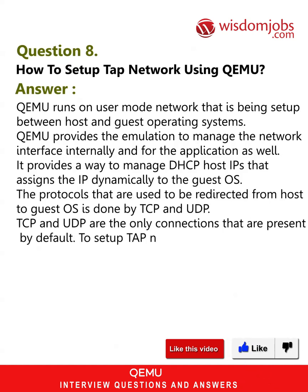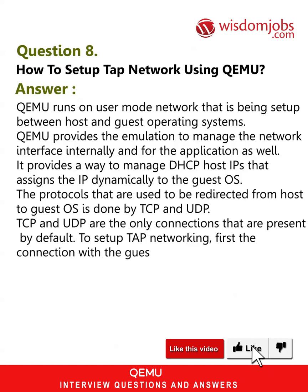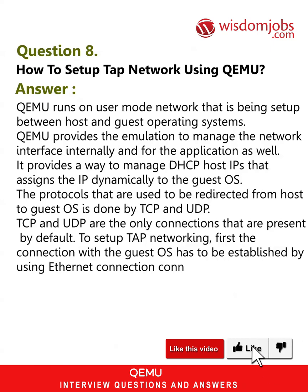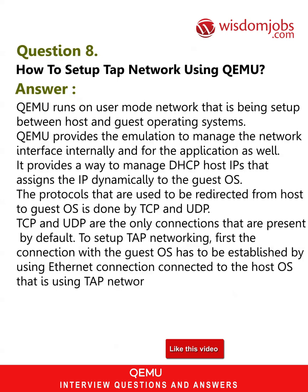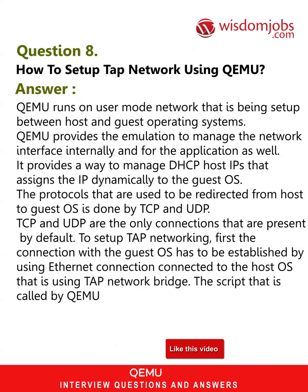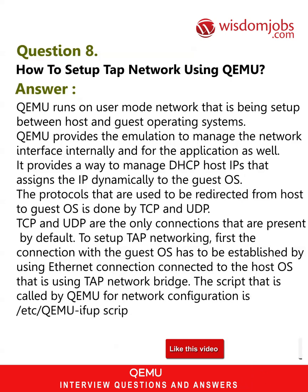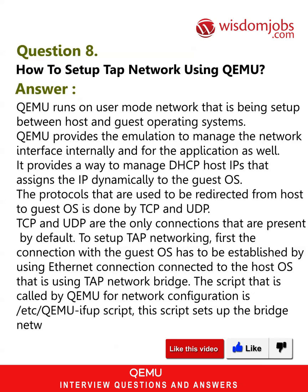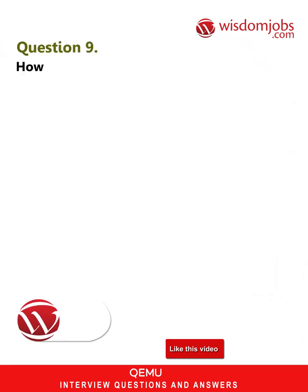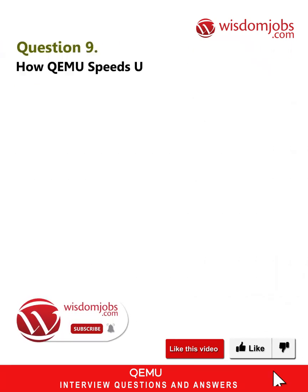To set up TAP networking, first the connection with the guest OS has to be established using an Ethernet connection connected to the host OS that is using a TAP network bridge. The script that is called by QEMU for network configuration is /etc/qemu-ifup. This script sets up the bridge network.